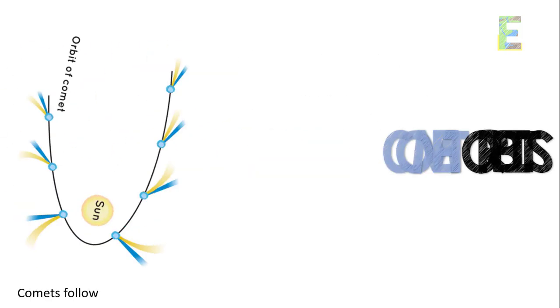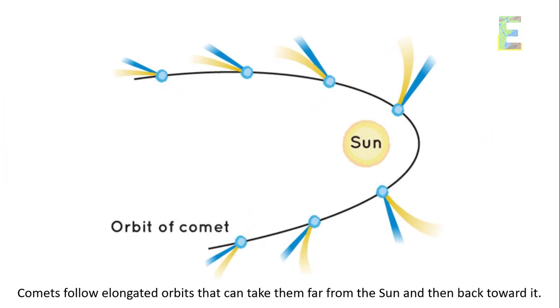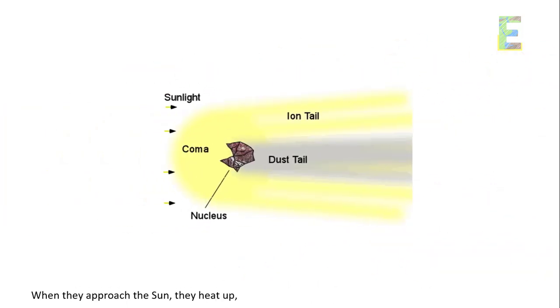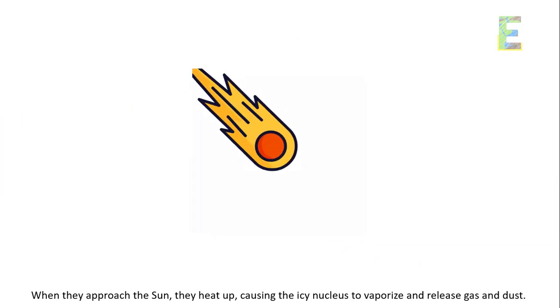Comet orbits. Comets follow elongated orbits that can take them far from the Sun and then back toward it. When they approach the Sun, they heat up, causing the icy nucleus to vaporize and release gas and dust.